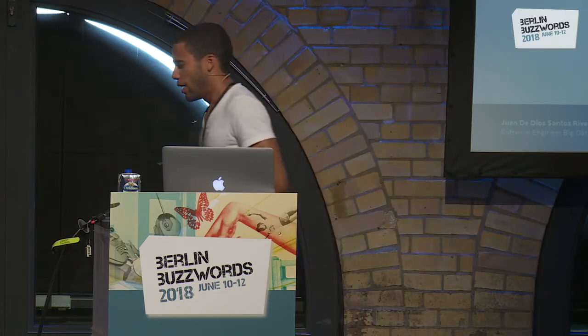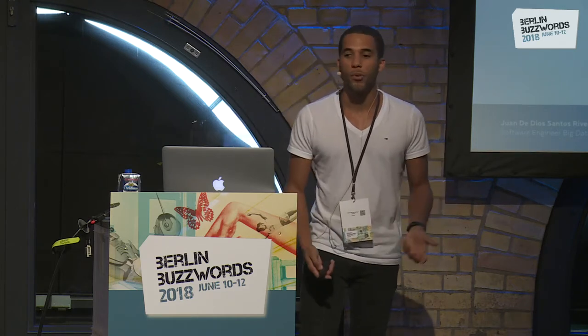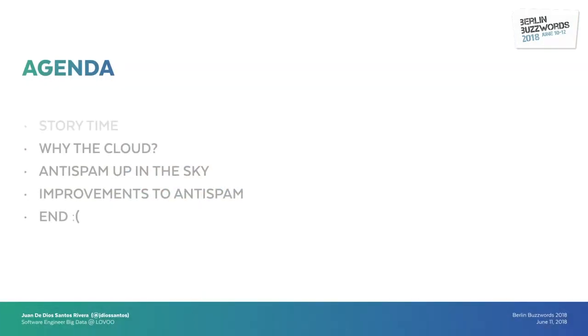So we started to think about a solution — what can we do to solve this? One day we got a really nice idea: to try some cloud solutions. And this is what I want to present to you guys today — why we moved to the cloud and how it is supporting us to do our job. This is my agenda. First, I'm going to talk about why the cloud — why did we choose to go to the cloud? Second, I'm going to focus more on Antispam and how we brought Antispam up to the sky. And then the improvements we got from this.